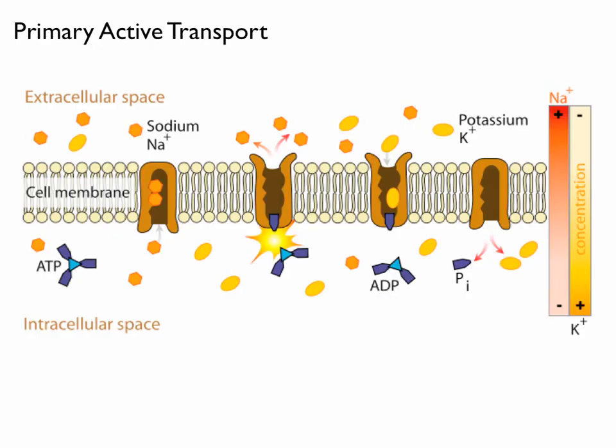Primary active transport is where we see ATP, or cellular energy, being used to pump particles from one side of the membrane to the other.